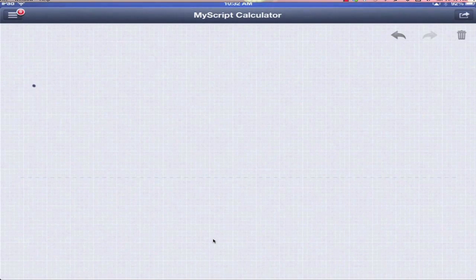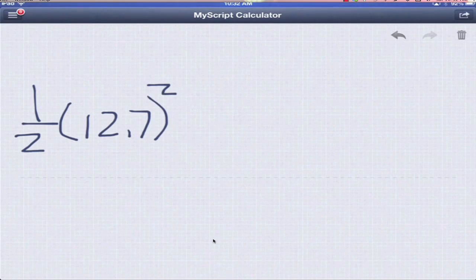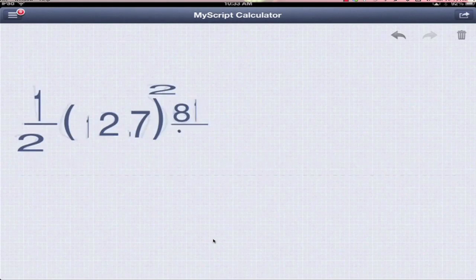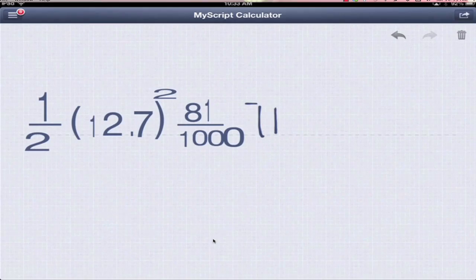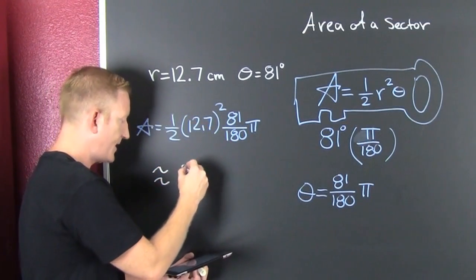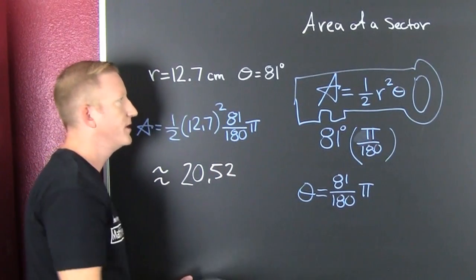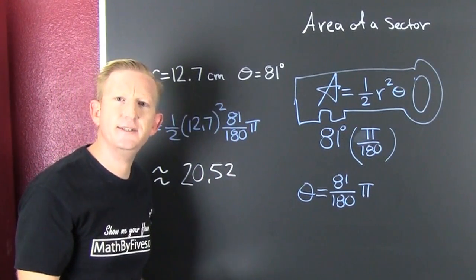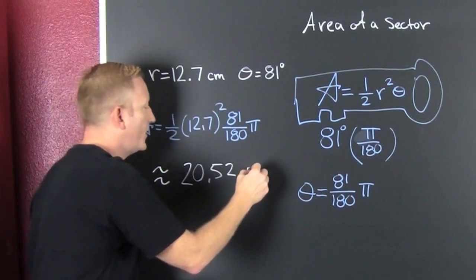So we go and we take one half of 12.7, we're going to square that, we're going to multiply it by 81 over 180, and we're going to multiply that by pi, so that's 20.52 ish, but what are our units? Are they G's? G units? No! They're centimeters squared.